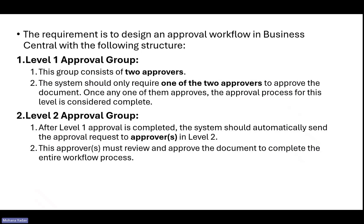Level one approval group: this group consists of two approvers, and the system should only require one of the two approvers to approve. Once any one of them approves, the approval process for this level is considered complete.